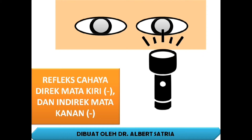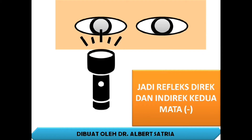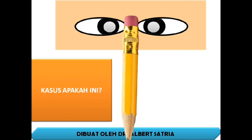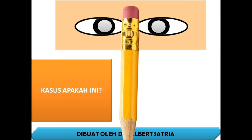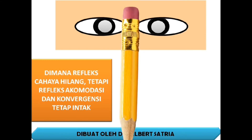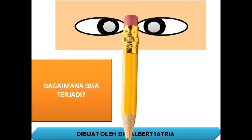Kasus keempat: refleks cahaya direk mata kiri negatif dan indirek mata kanan negatif. Refleks cahaya direk mata kanan negatif dan indirek mata kiri negatif. Jadi refleks direk dan indirek kedua mata negatif, tetapi refleks konvergensi, akomodasi, dan konstriksi pupil tetap ada bila benda didekatkan. Kasus apakah ini? Ini adalah kasus fenomena pupil Argyll Robertson, di mana refleks cahaya hilang tetapi refleks akomodasi dan konvergensi tetap intak.